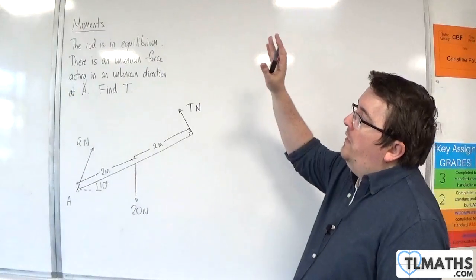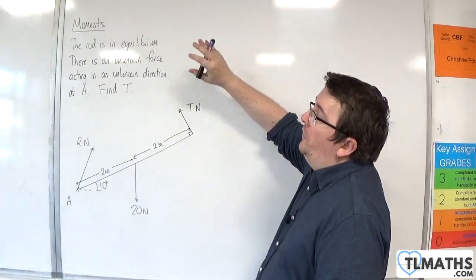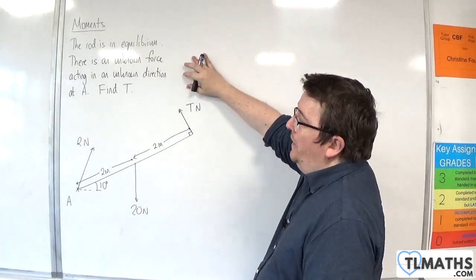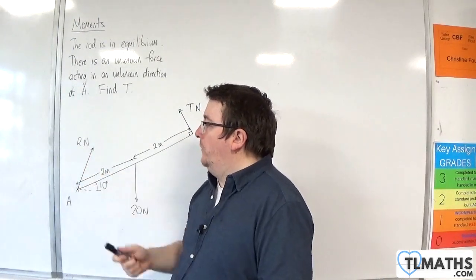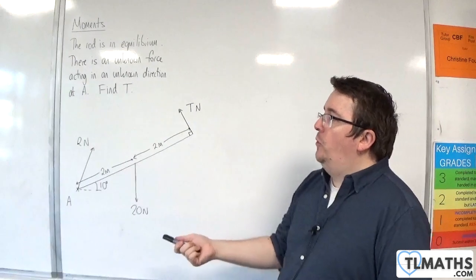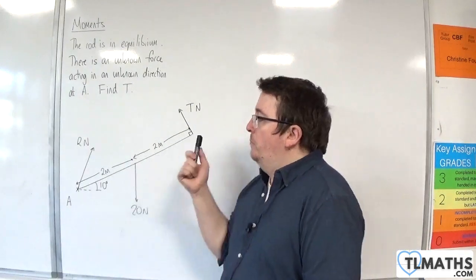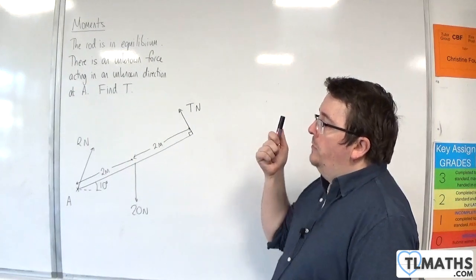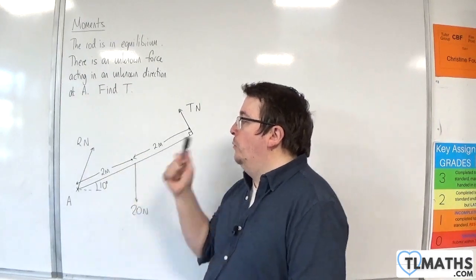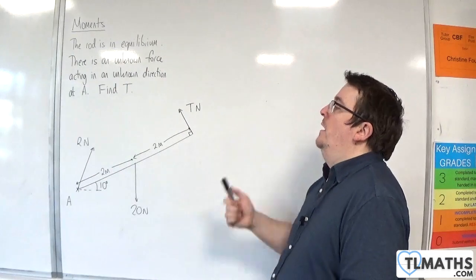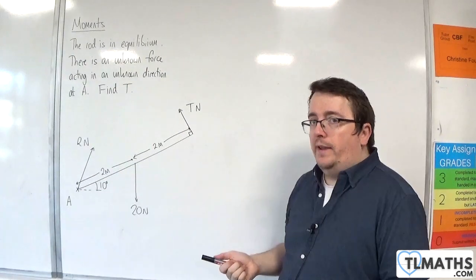Well the thing is that we've been told there is an unknown force acting in an unknown direction at A, so we've got this R-Newtons. Now our job is not to work out R here, but to show that regardless of whatever that force is and whatever direction it's pointing, we can still work out T.